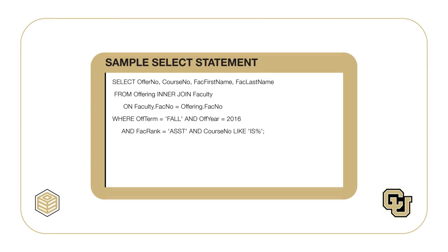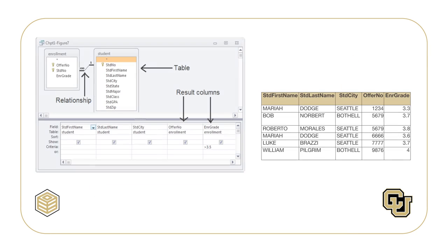Most DBMSs provide more than one tool for non-procedural access. The SELECT statement of the Structured Query Language, SQL, described in Modules 4 and 5, provides a non-procedural way to access a database. Most DBMSs also provide graphical tools to access databases. For example, Microsoft Access provides a graphical tool in which the user only has to indicate the required tables, relationships, and columns. Microsoft Access is responsible for generating the details to retrieve the required data. Other vendors, including Oracle, have similar tools, although there is no industry standard tool.